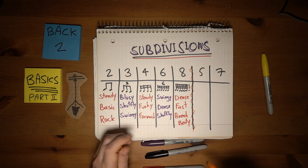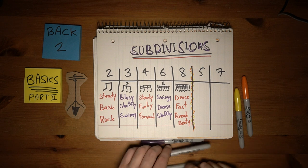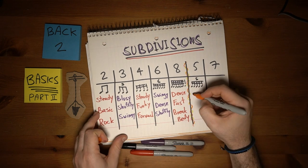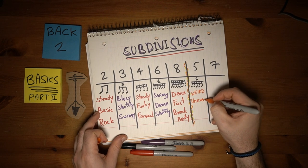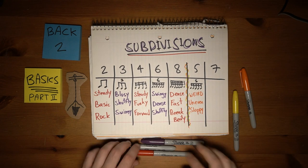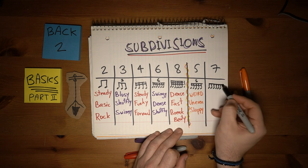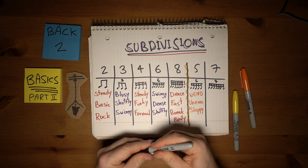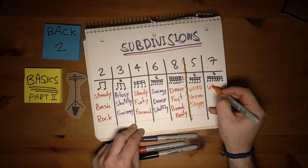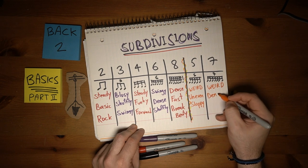The next one is not as common, and it's dividing each quarter note into 5 equal beats — this is called a quintuplet. The feel I get from this one is kinda weird and uneven; you might even say sloppy. The last subdivision we'll discuss is dividing each quarter note into 7 pieces — this is called a septuplet. Like the quintuplet, it's kinda weird and uneven, though a bit denser. Honestly, septuplets are pretty rare.